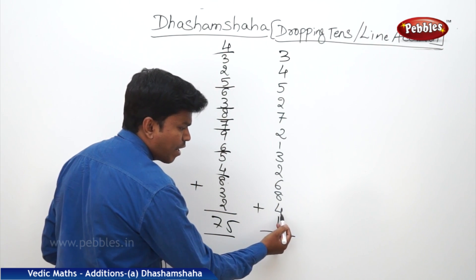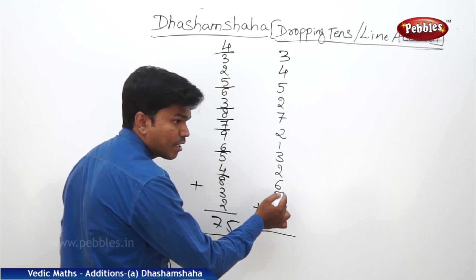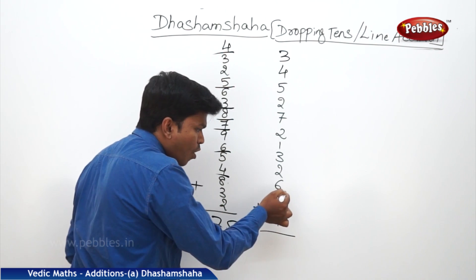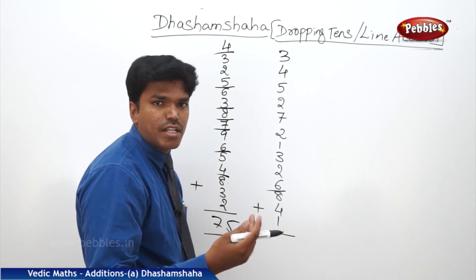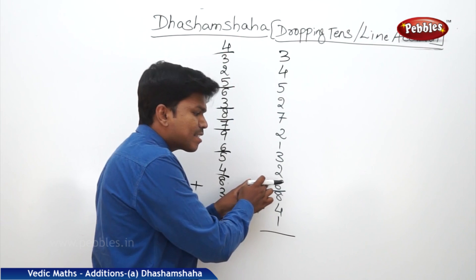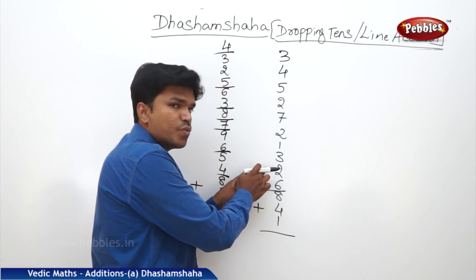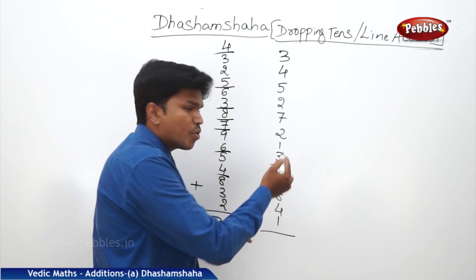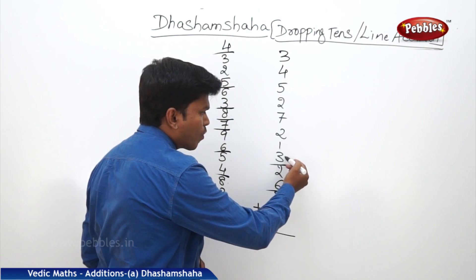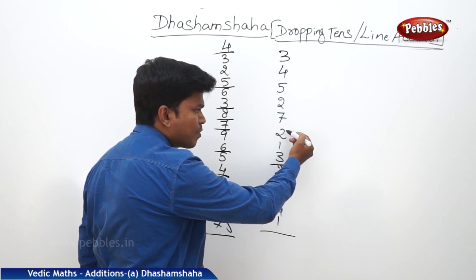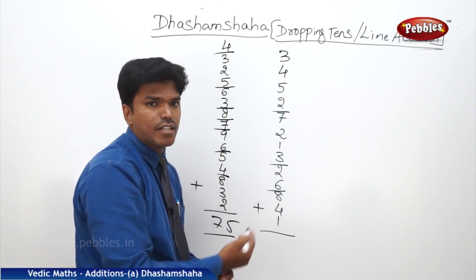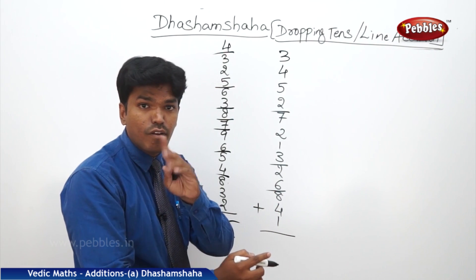What is 1 plus 4? 5. 5 plus 8? 13 — more than 10. Drop it in. Remaining is 3. Immediately carry the 3 to the next number. What is 3 plus 6? 9. 9 plus 2? 11. Again more than 10, so drop it in. Remaining is 1. 1 plus 3? 4. 4 plus 1? 5. 5 plus 2? 7. 7 plus 7? 14 — drop it in. Remaining is 4.